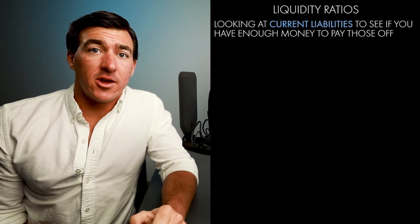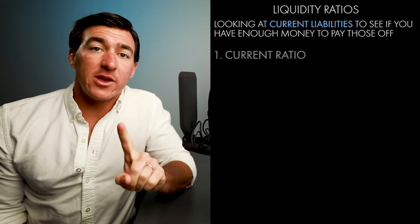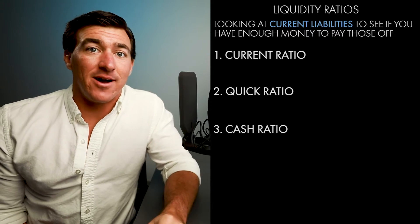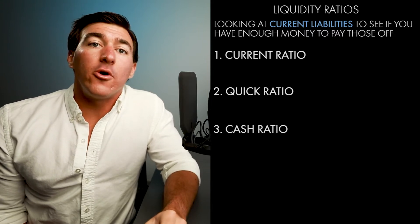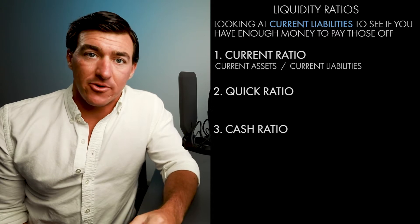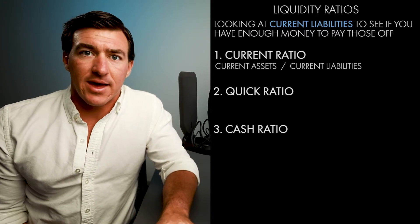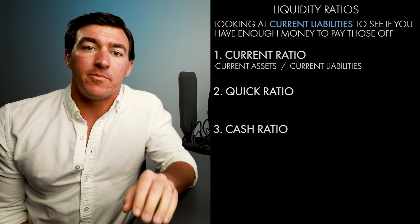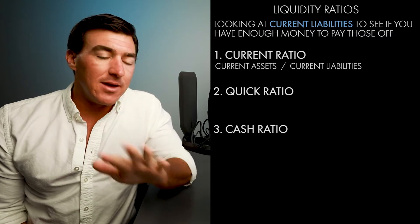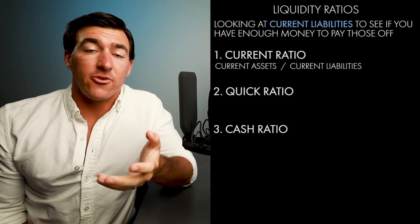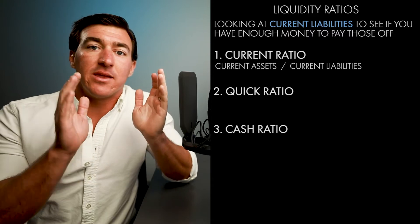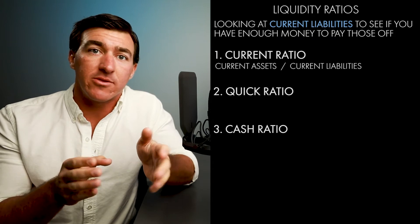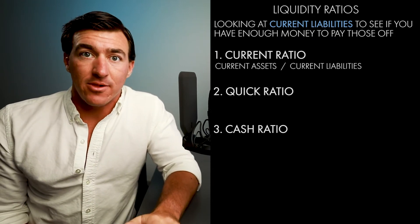There are three main ratios: the current ratio, the quick ratio, and the cash ratio. The current ratio looks at all your current assets divided by your current liabilities. When you compare two balance sheet accounts like that, you can average them or not — it doesn't really matter. Just make sure if you average one side, you also average the other. The current ratio is simply current assets over current liabilities.